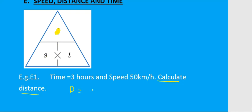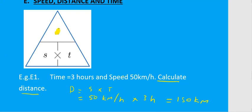Speed is 50 kilometers per hour and time is 3 hours. Multiplying 50 by 3 gives 150 kilometers. The hours cancel out, leaving a distance of 150 kilometers.